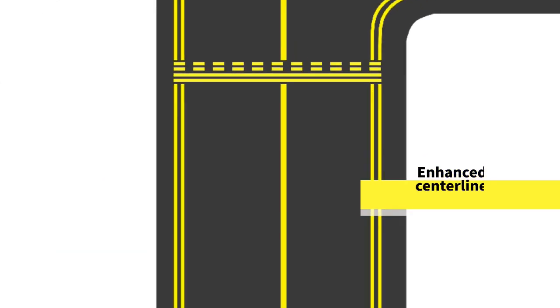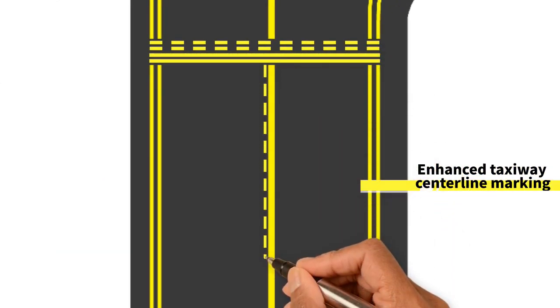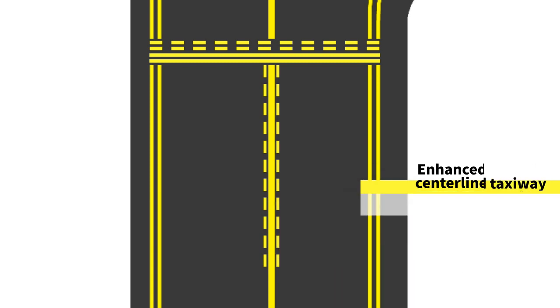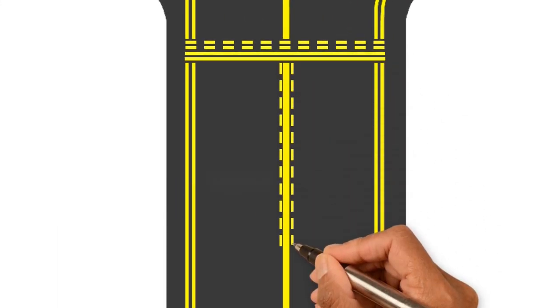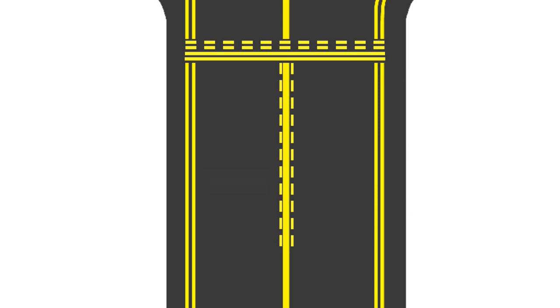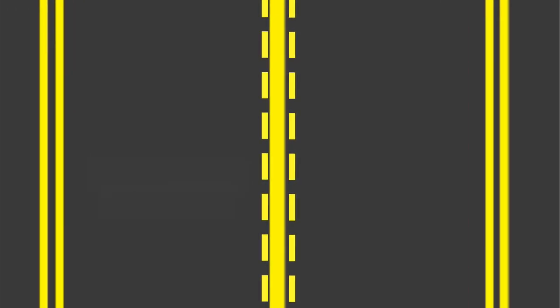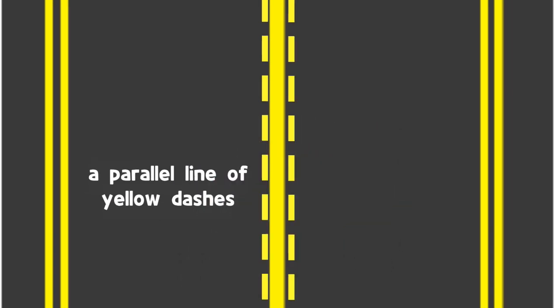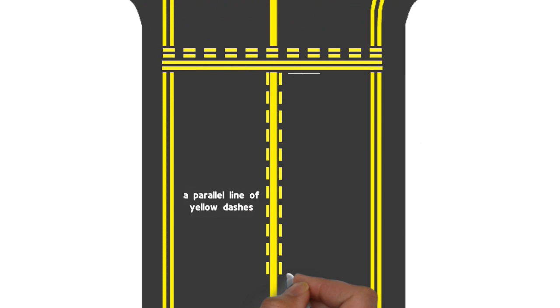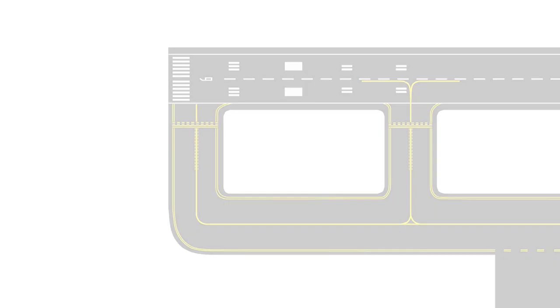The enhanced taxiway centerline marking provides additional visual cues to alert pilots of an upcoming runway taxiway holding position marking in order to minimize the potential for runway incursions. This centerline marking consists of a parallel line of yellow dashes on either side of the normal taxiway centerline. The taxiway centerlines are generally enhanced for a maximum of 150 feet prior to a runway holding position marking.